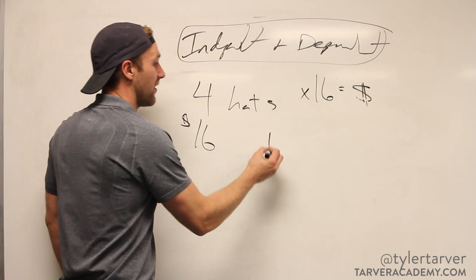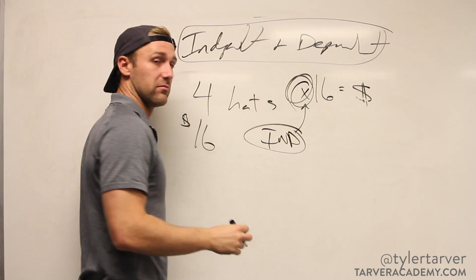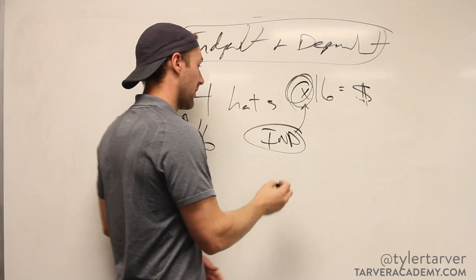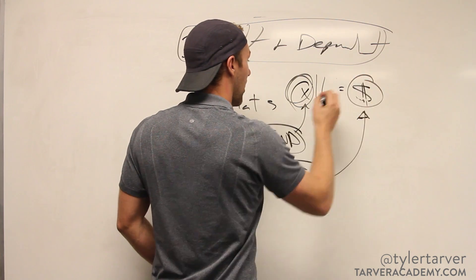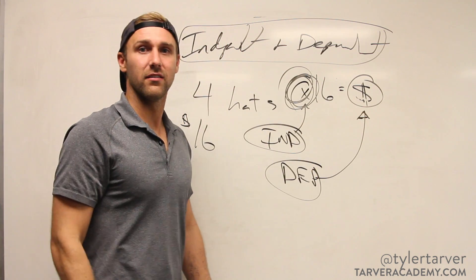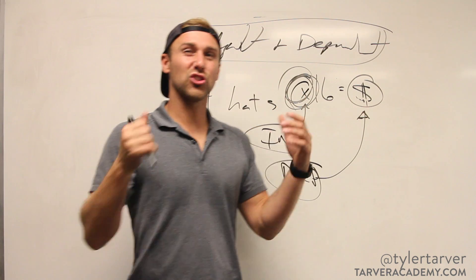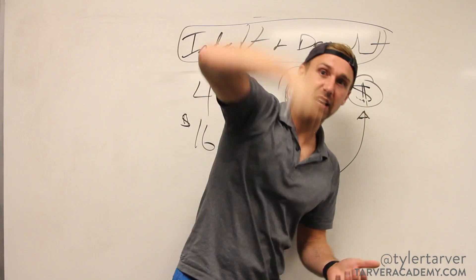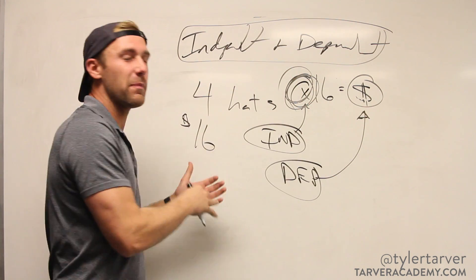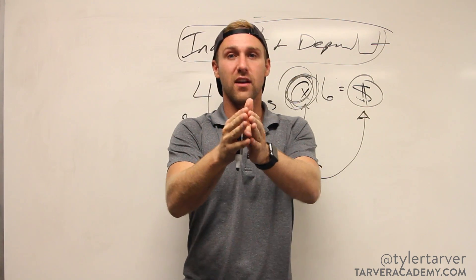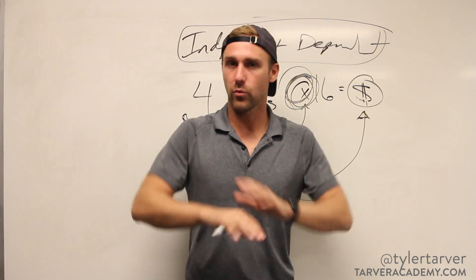So our independent variable is x, which is the amount of hats we're buying. The dependent is the price, which depends on how many hats I'm buying. Almost all the time in your equations, whatever you're solving for x — the thing you're putting into the problem — that is going to be your input, your independent variable, because you're placing it in there and you control it.